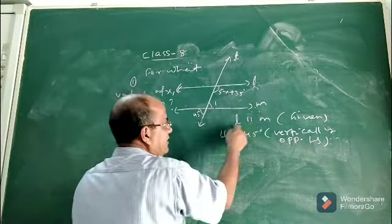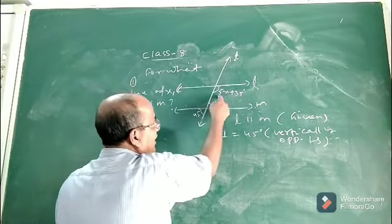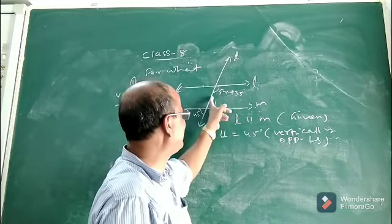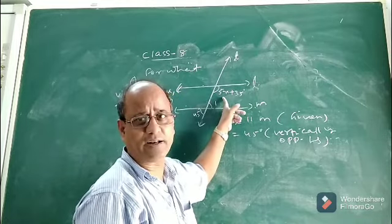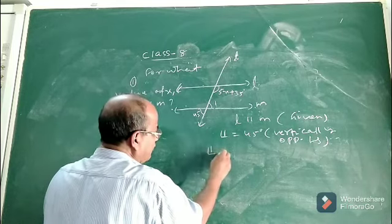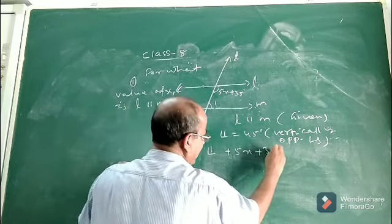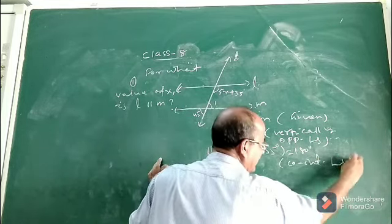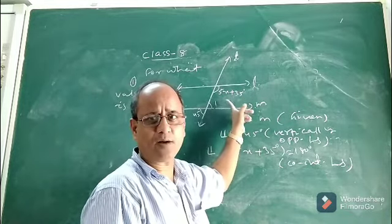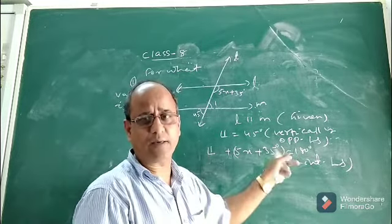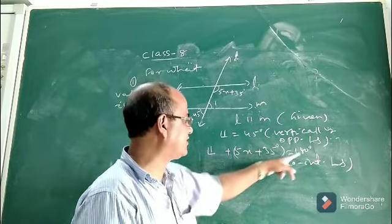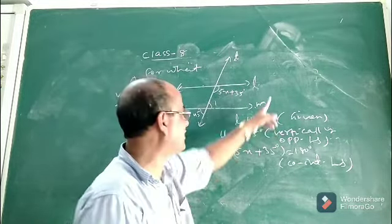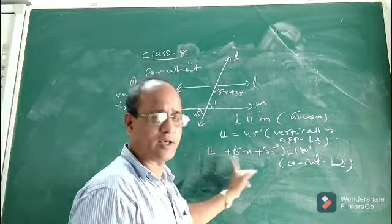Since L is parallel to M and T is the transversal, look at angle 1 and the angle 5x plus 35 degrees. They form a pair of co-interior angles — consecutive interior angles lying on the same side of the transversal. A pair of co-interior angles is always supplementary, so their sum must equal 180 degrees. Therefore, angle 1 plus 5x plus 35 degrees equals 180 degrees.